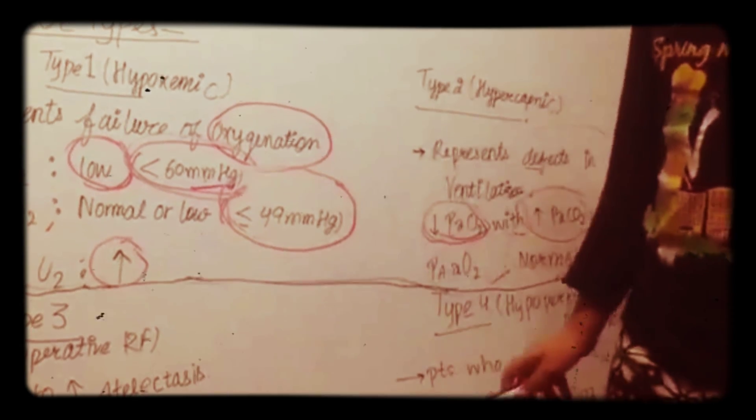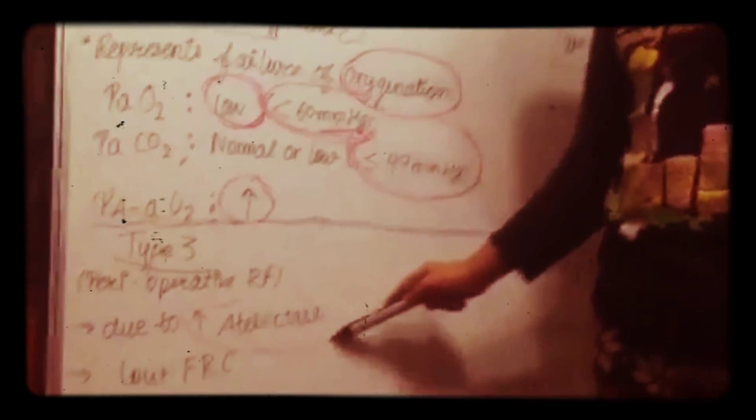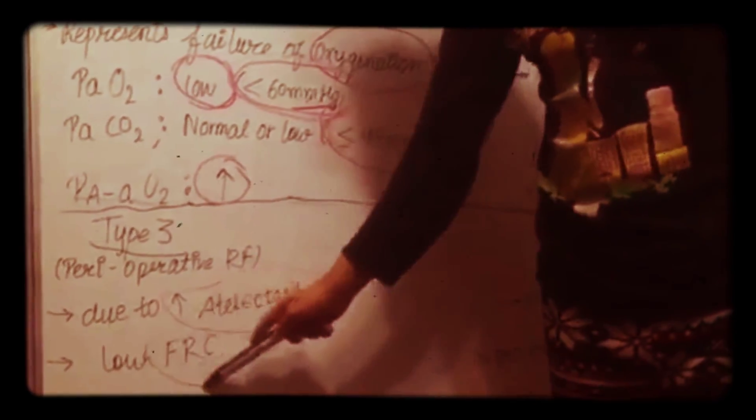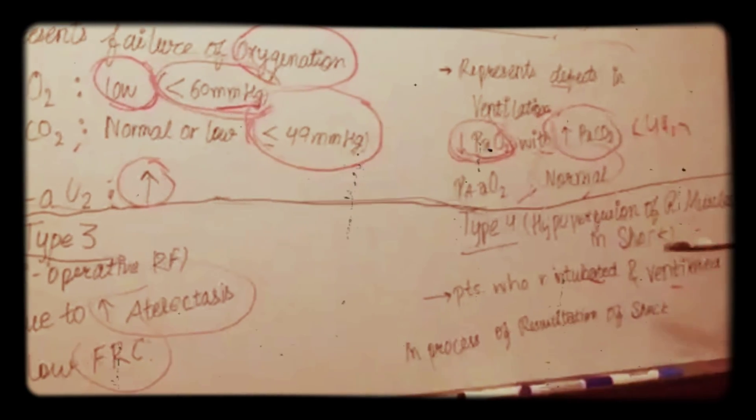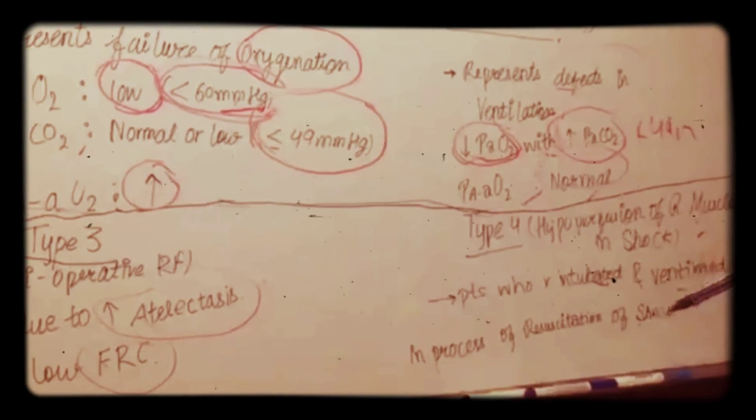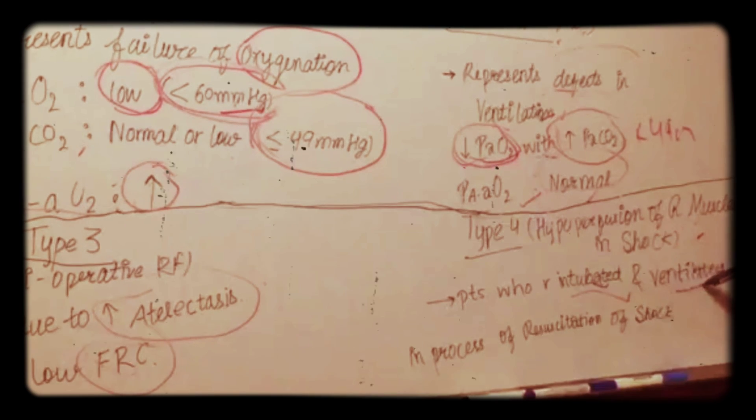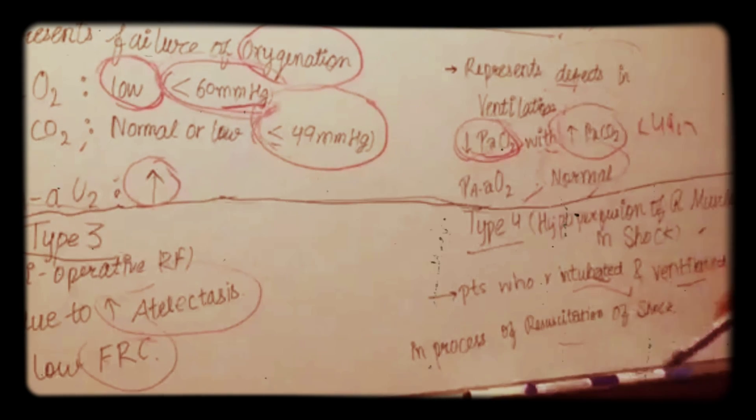In type 3, perioperative respiratory failure, it is due to increase in atelectasis and low functional residual capacity. Type 4 occurs mainly in those patients who are intubated and ventilated in process of resuscitation of shock.